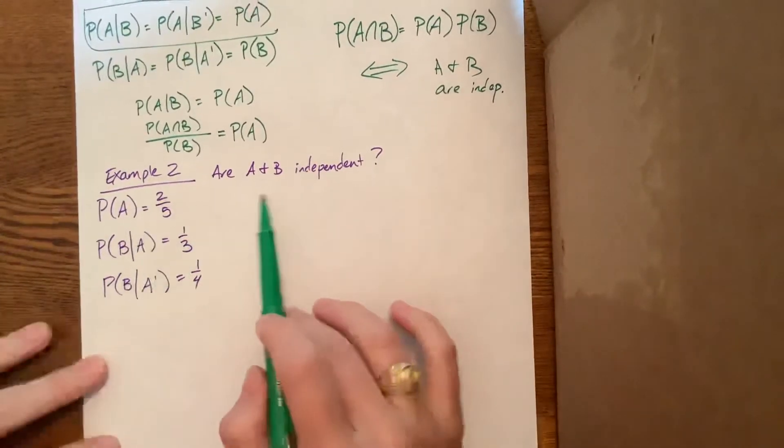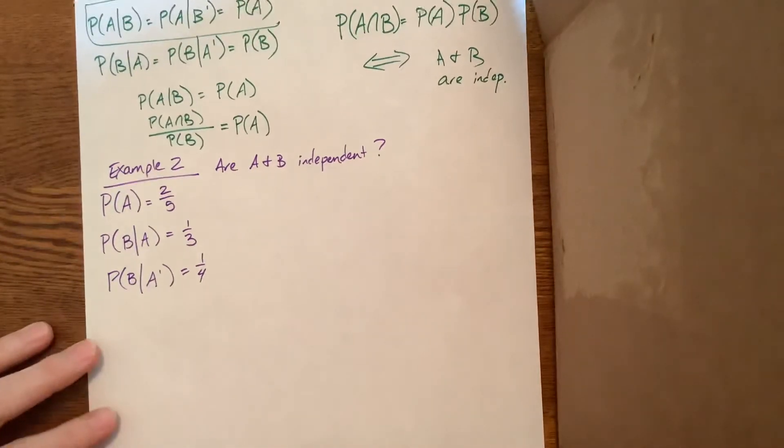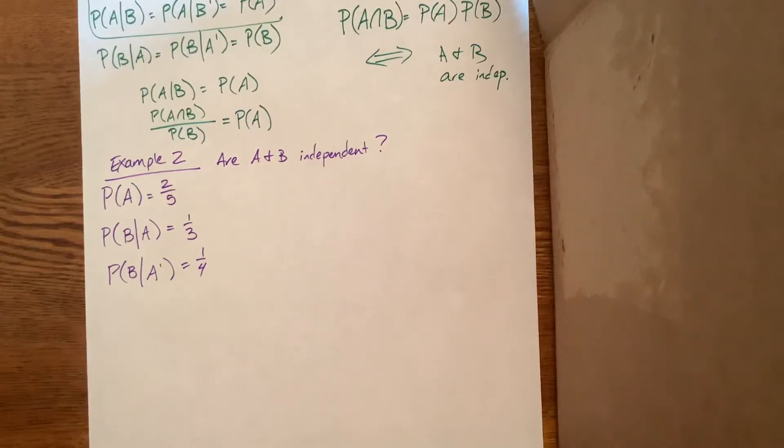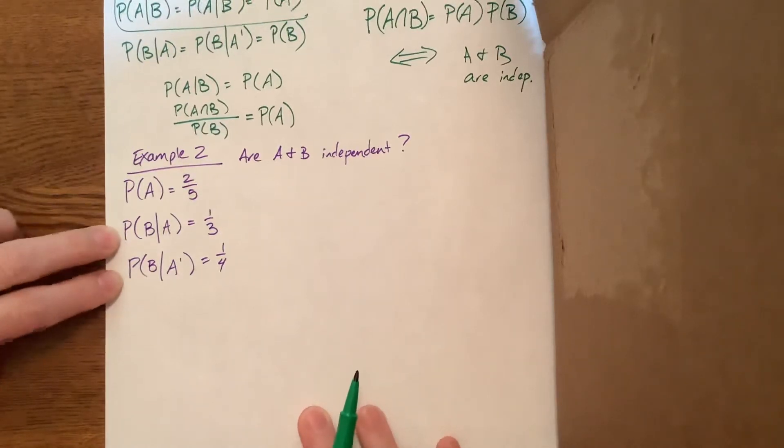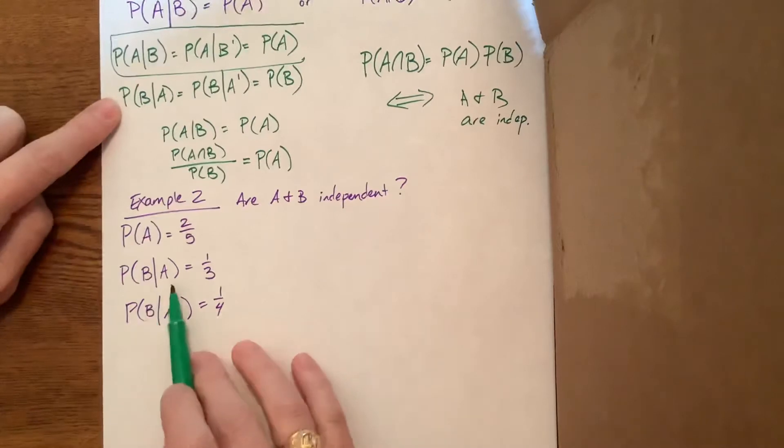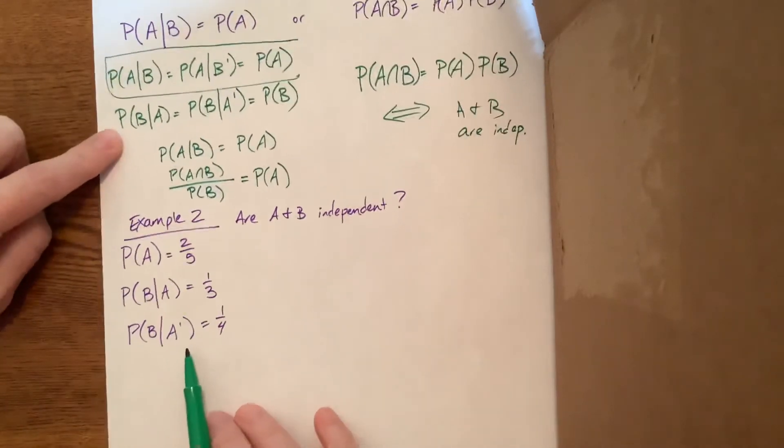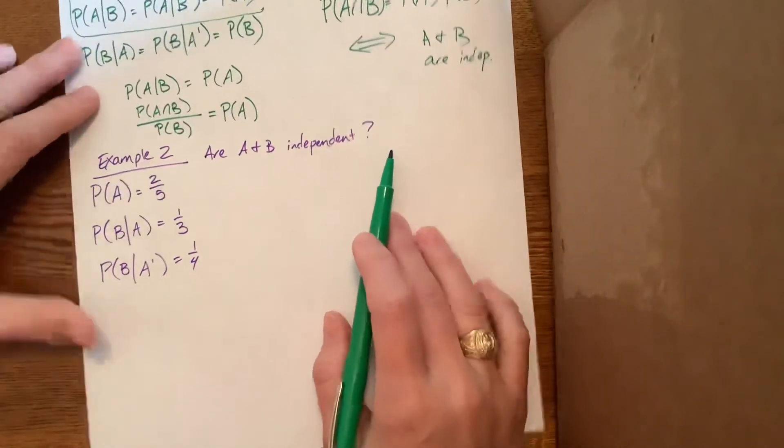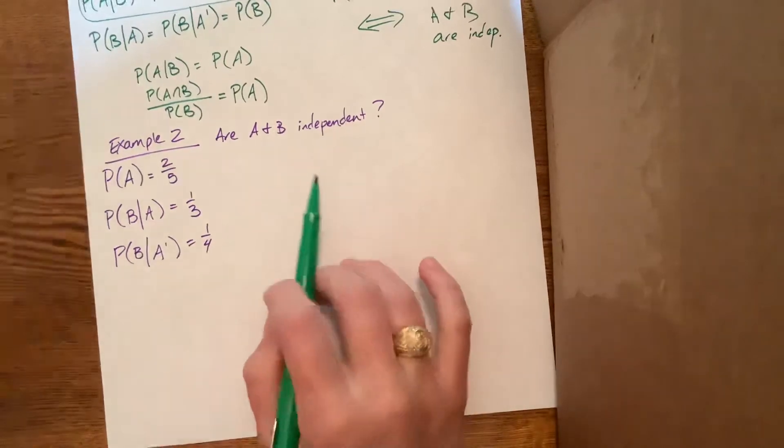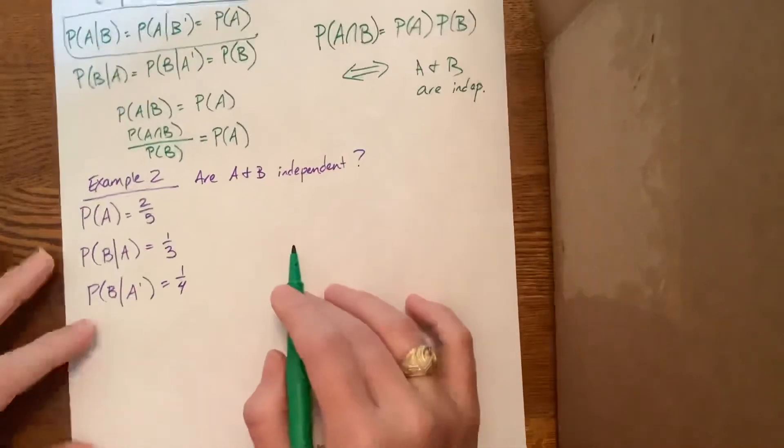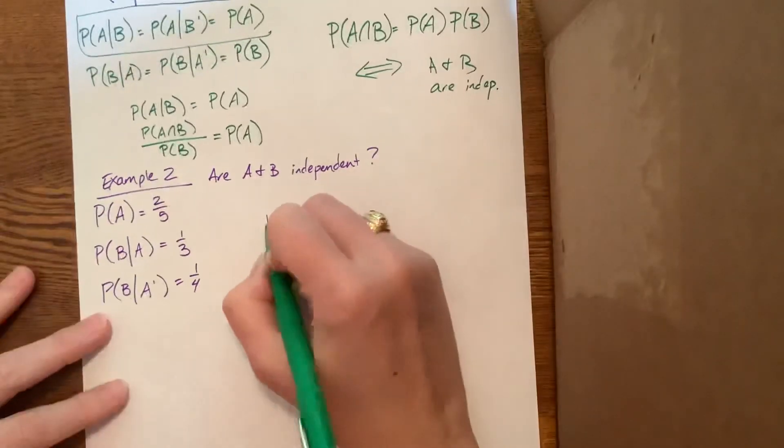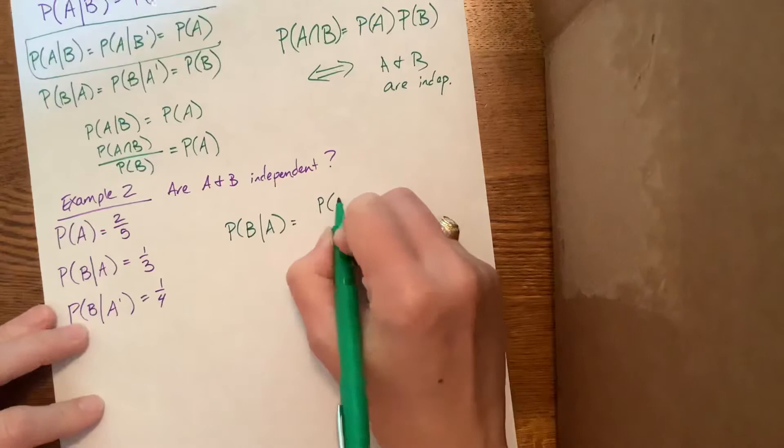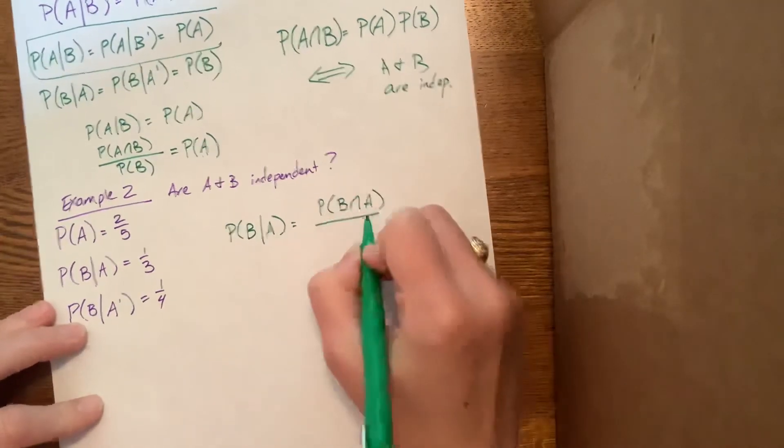So on this one, are A and B independent? Already we know that they're not independent because we had said before that the probability of B given A needs to match the probability of B given not A, and they don't. So already we know the answer is no. But I think this question was like the third part of the overall problem. So I think they asked us to find other things first. Let's just play with this. We know that the probability of B given A is going to be equal to the probability of their intersection, B intersect A, divided by the probability of A. You're living inside the world of A.